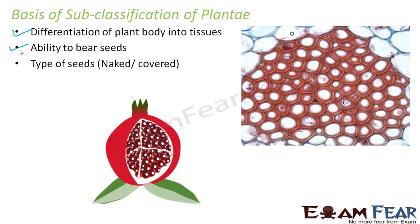The third basis was the type of seeds. For plants which do bear seeds, the seeds can be covered or the seeds can be naked. Depending on that, further classification has been done. So these are three important bases for subclassification of the plant kingdom.